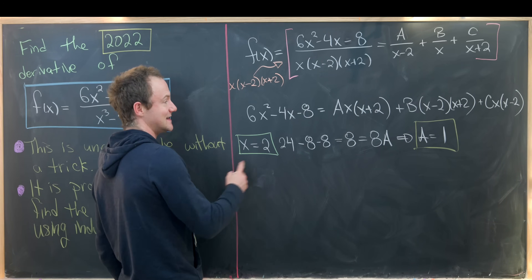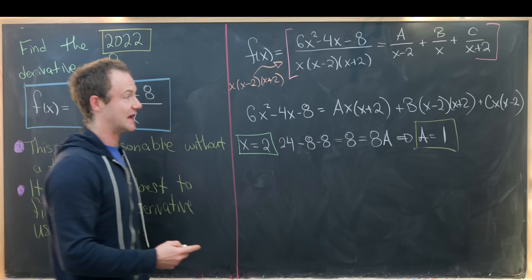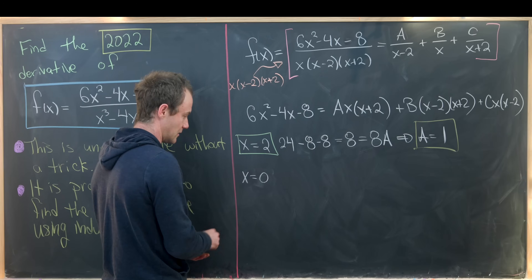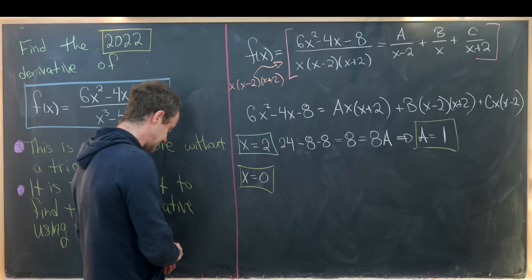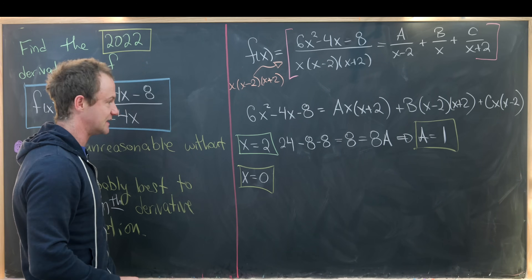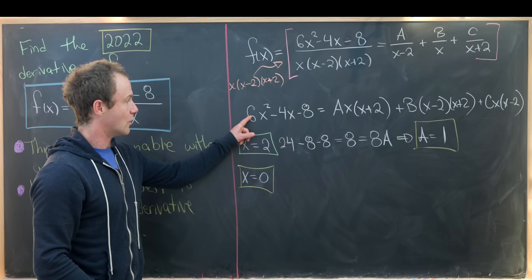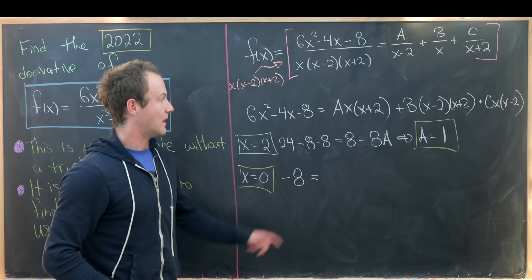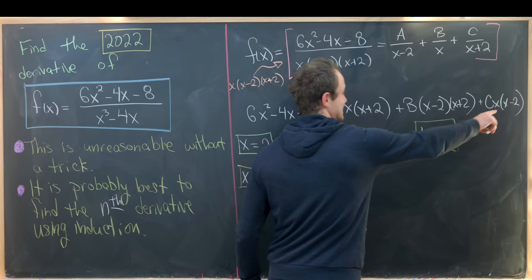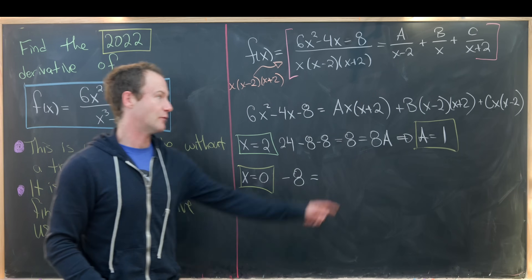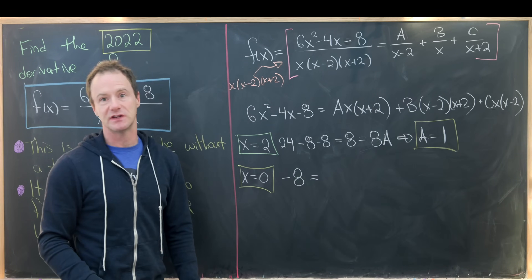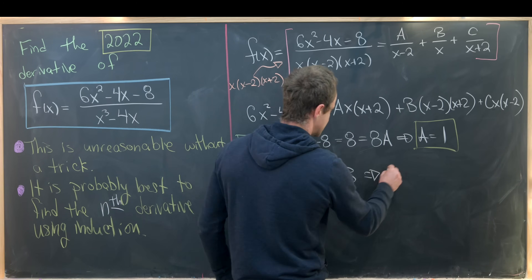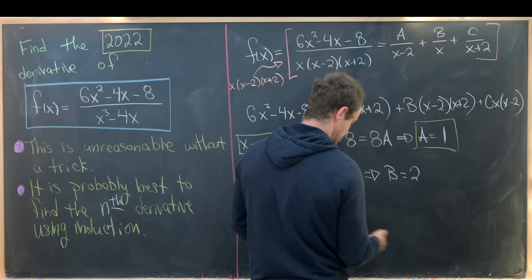Next, setting x equals 0: the left side gives negative 8. The first and last terms on the right cancel, leaving B times (negative 2) times (positive 2), which is minus 4B. So B equals 2.